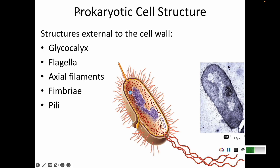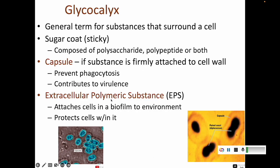Glycocalyx would be like a sugar coat around the cell. Flagella are long things that help it move. Axial filaments and fimbriae are hairy structures around it, and pili are a long pokey structure. Glycocalyx is just a generic term for sugary material around a cell — usually a polysaccharide, maybe a peptide or polypeptide mix. If it's firmly attached to the cell wall, it's called a capsule.